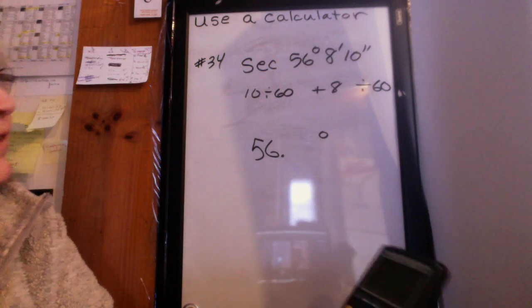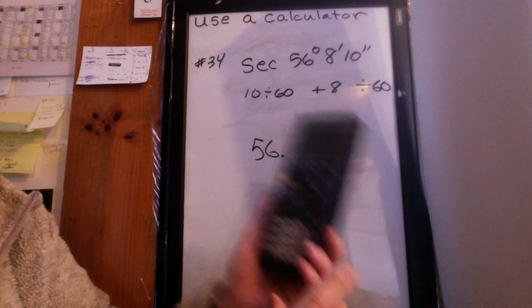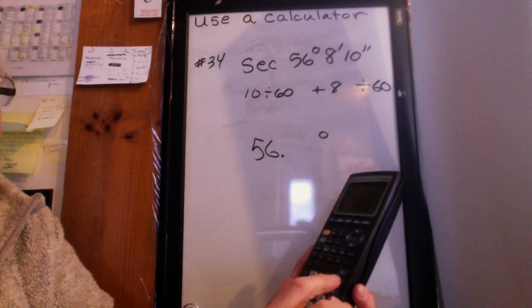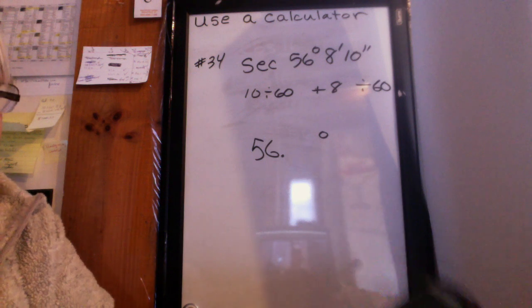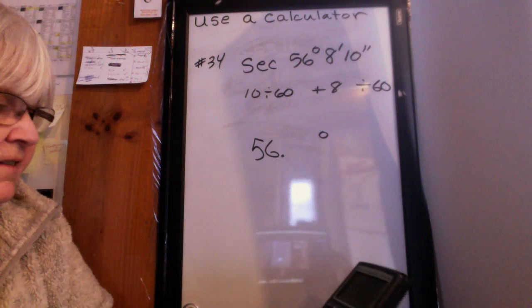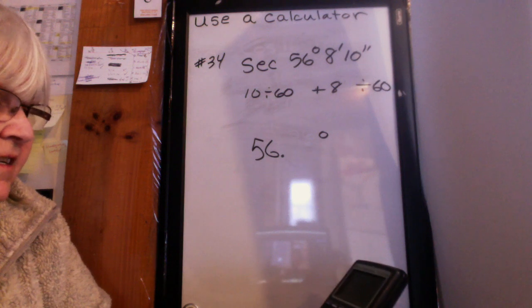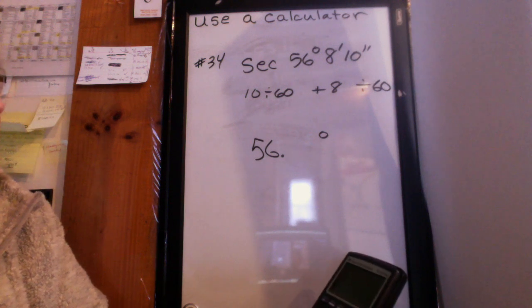Clear everything out. So you're going to do 10 divided by 60, then hit enter. Clear it out. I didn't do something right here. 10 divided by 60, hit enter. You get a decimal.